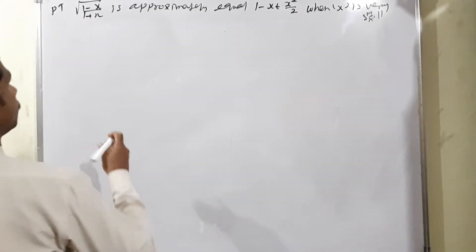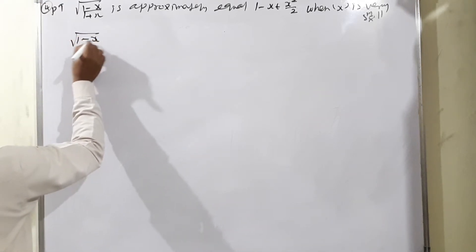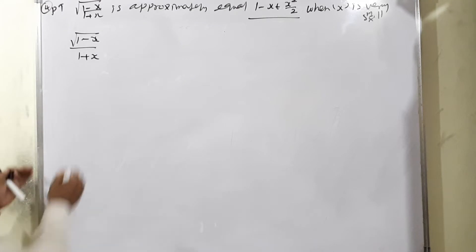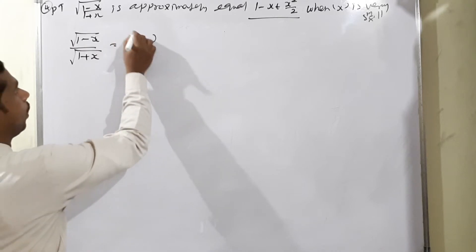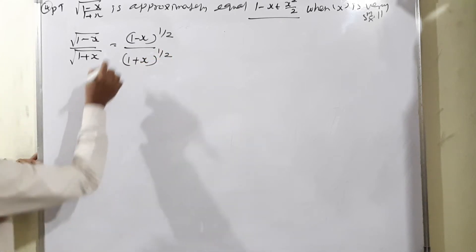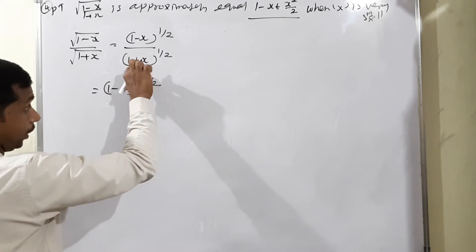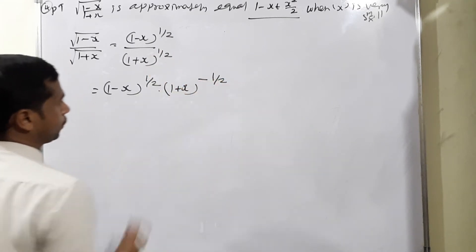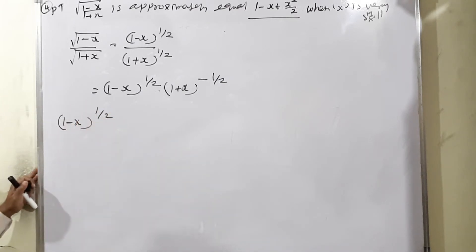Question 4: Prove that √((1−x)/(1+x)) ≈ 1 − x + x²/2. Solution: Removing the square root, we write (1−x)^(1/2) × (1+x)^(−1/2). The first term: (1−x)^(1/2). Using the binomial formula with n = 1/2 and x replaced by −x.